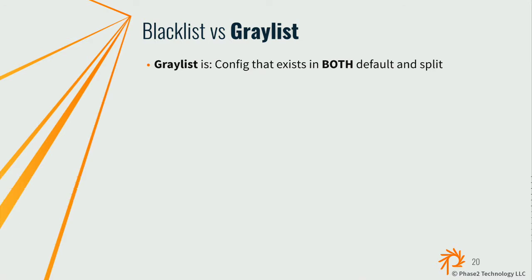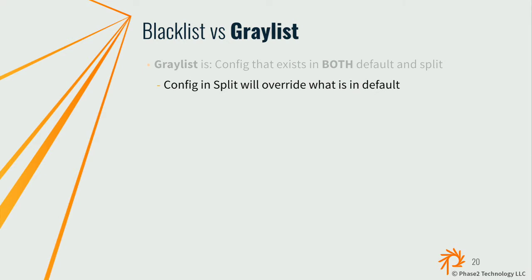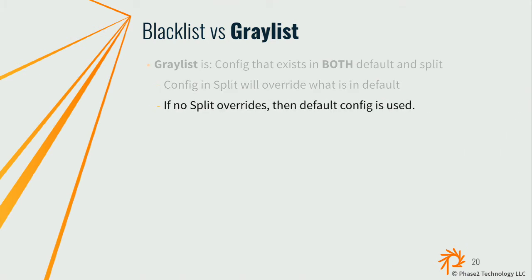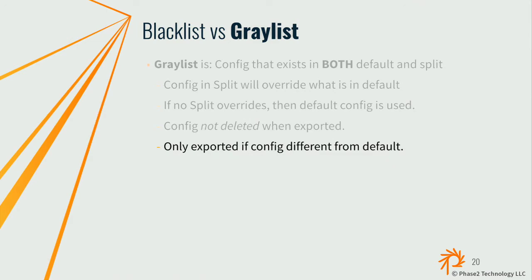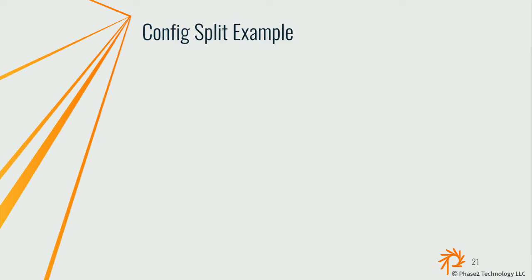The graylist (now called "conditional split") is config that exists in both the default and split directories. When you import, config in the split directory overrides what's in the default. So if system.site has different site names in each place, the split's version takes effect. It also won't delete graylisted config on export — it puts it in the default directory. It only exports to the split directory if the config is different from default.